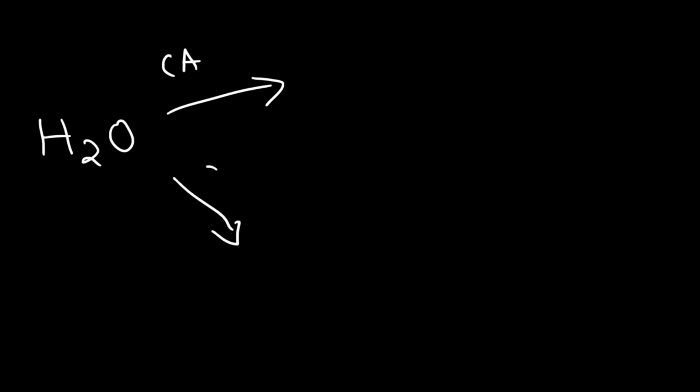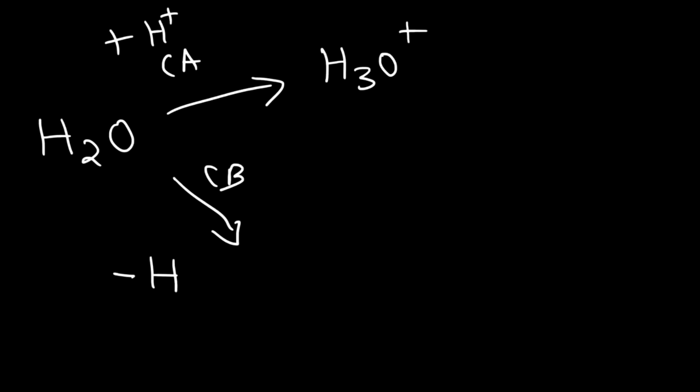To find the conjugate acid of water, add H⁺ to it, increasing the charge by one — water becomes H₃O⁺, going from zero to +1. To write the conjugate base of something, take away a hydrogen and decrease the charge by one. Water loses a hydrogen and the charge decreases from zero to -1, so the conjugate base of water is hydroxide, and the conjugate acid is H₃O⁺.